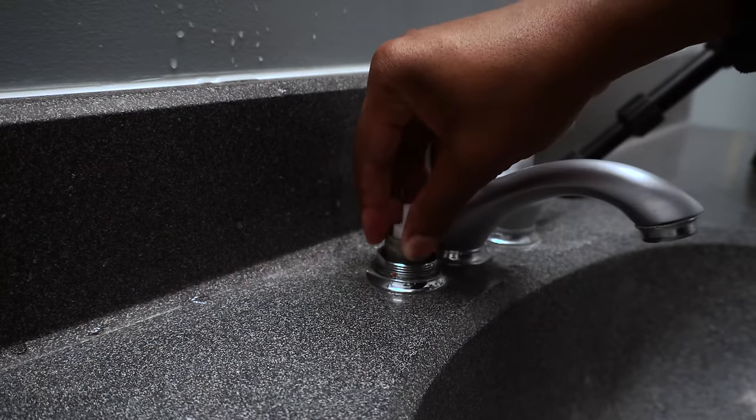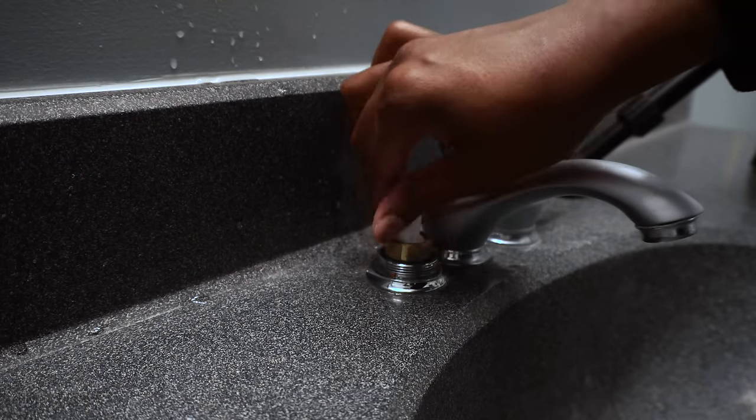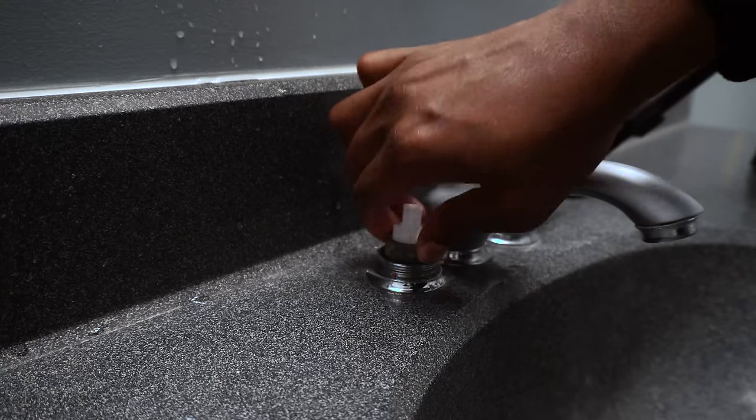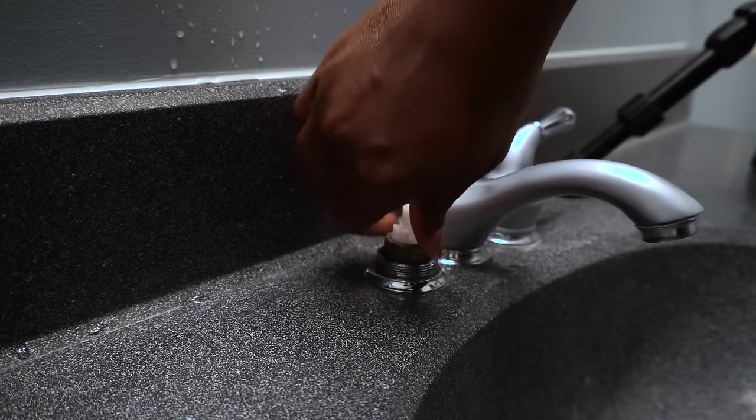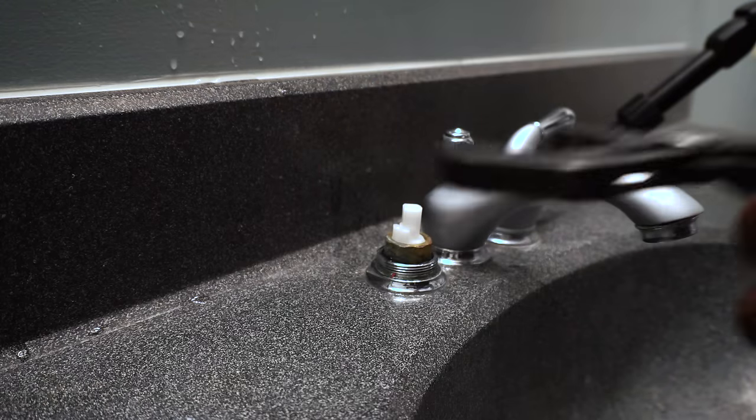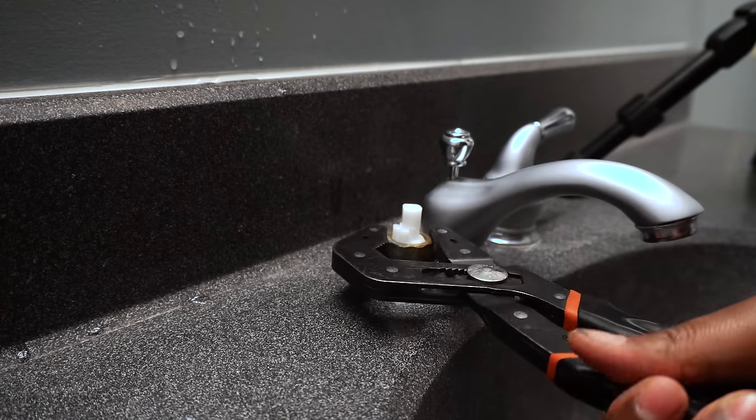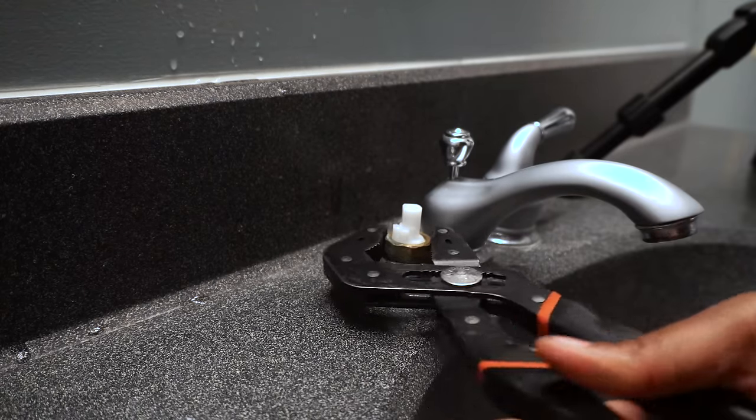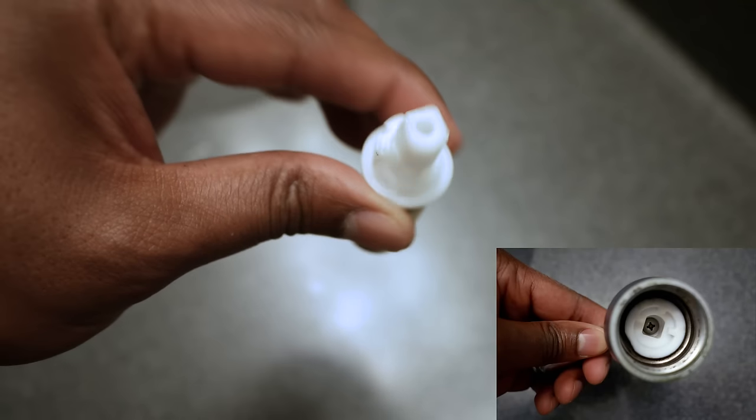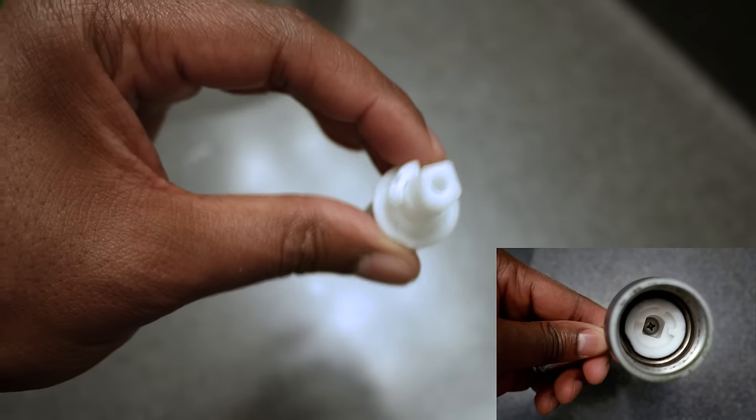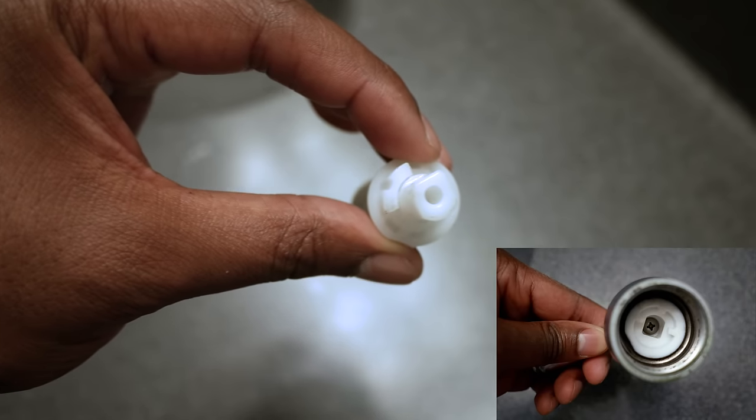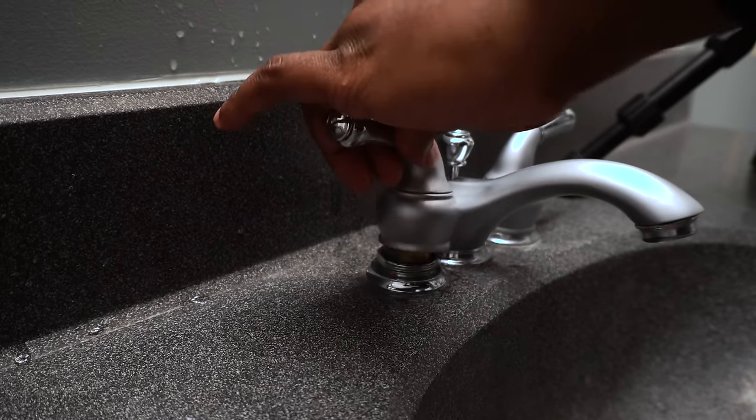Now you can put the nut back on. Just hand tighten it. And then once it's pretty snug you can do the last turn with the pair of pliers or the wrench. Here's a closer look of the one I was talking about. You see that the white piece has a flat part and a round part. And then you look at the handle and it matches that. You just kind of want to slide it in there so it fits snug.